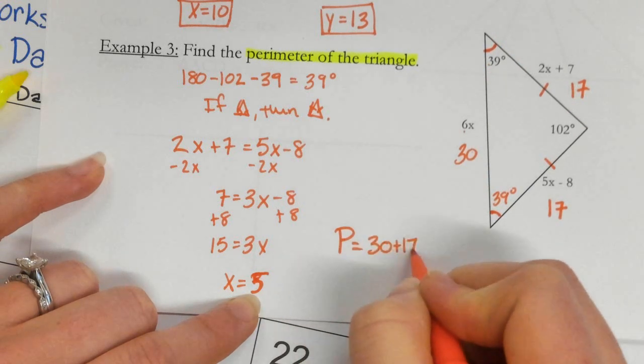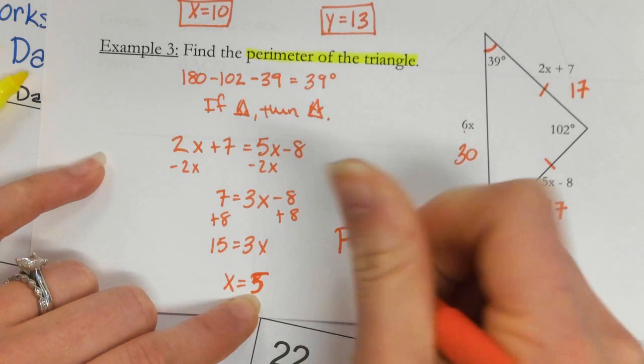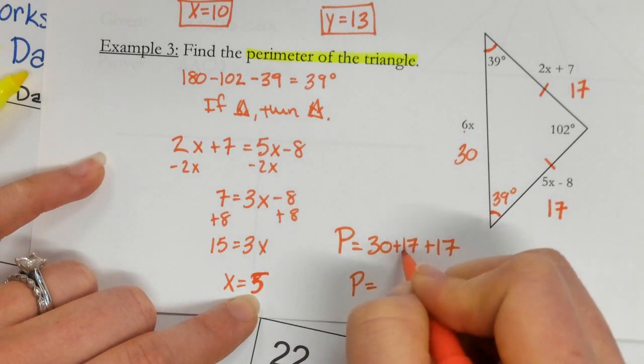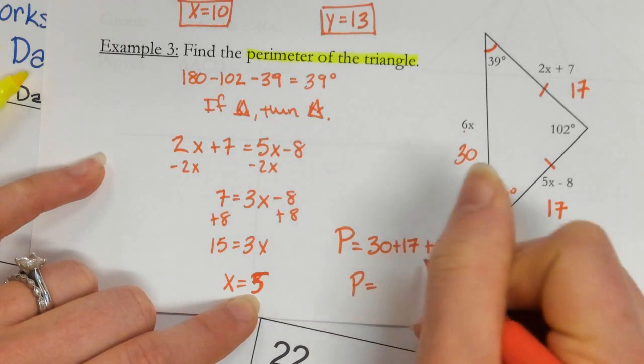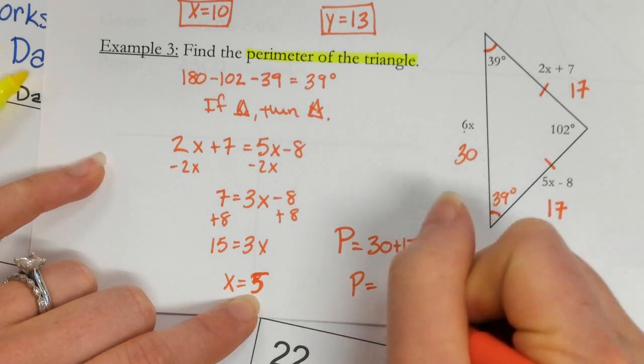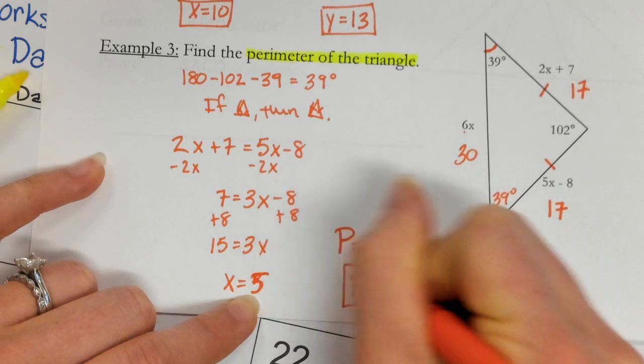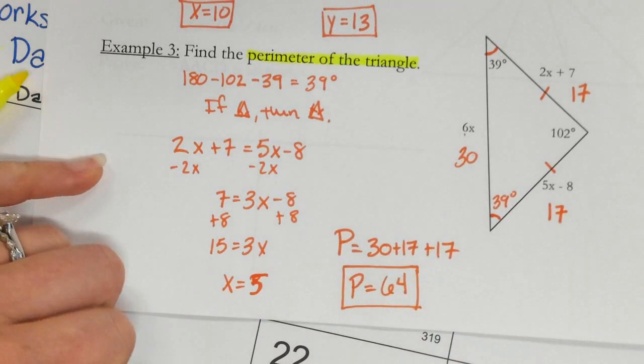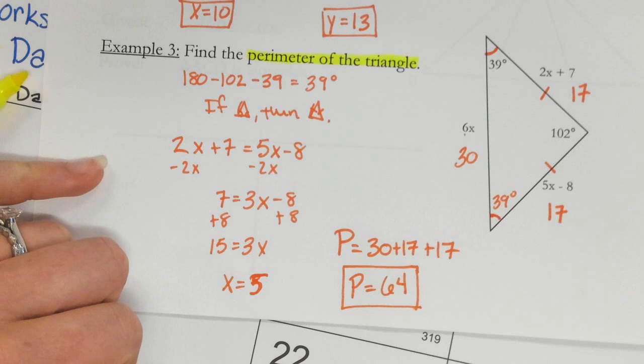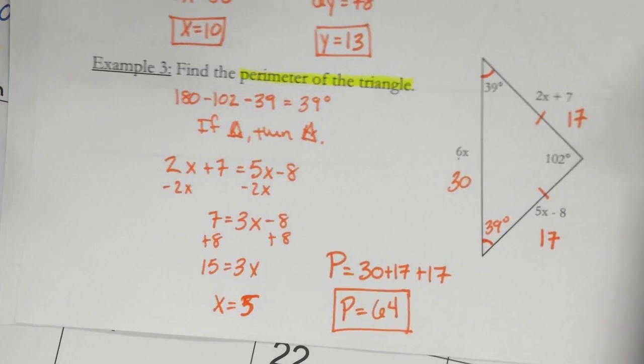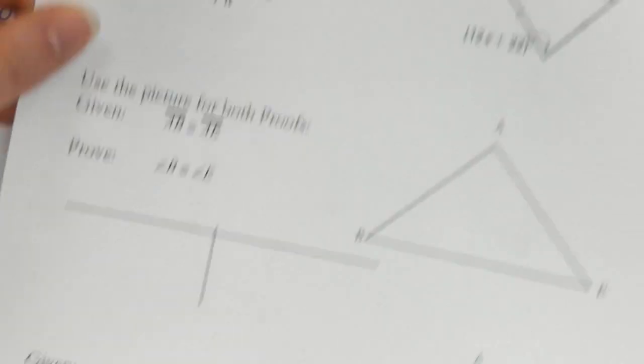30 plus 17 plus 17. 30 plus 10 plus 10 is 40, 50. And then I have another 14. So that's 64. So my perimeter is 64 units. So those are some harder ones that we will come across and we will see.